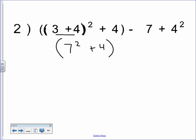So I had to do the parentheses first. The next thing in parentheses is the exponent, so I'll do that next. And the next thing in parentheses is the adding. 49 plus 4 is 53.